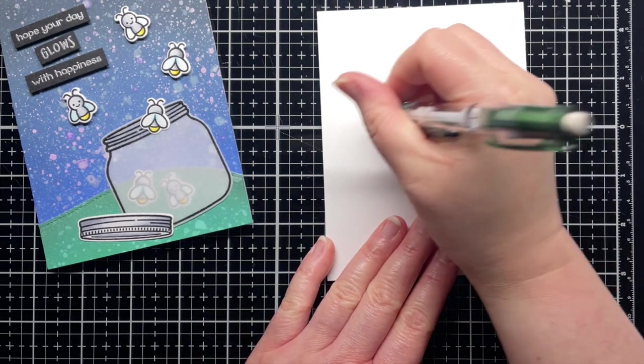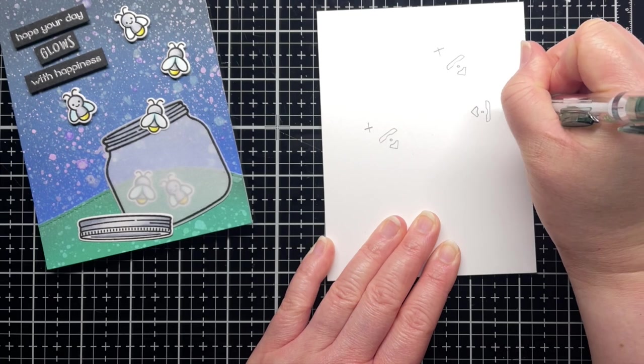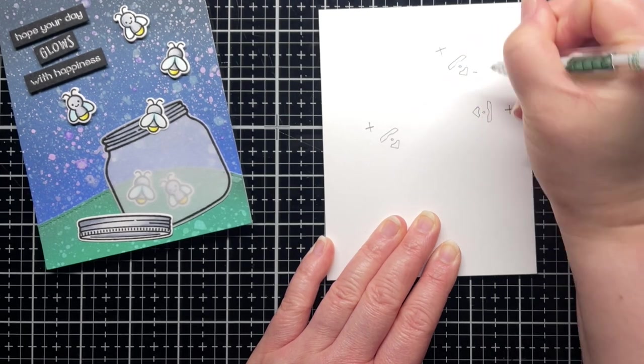I also label the positive and negative sides of the outlines as a reference. The sharp point is the negative side and the long side is the positive.